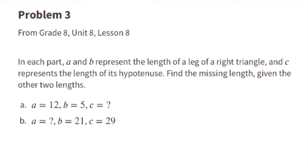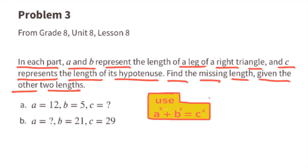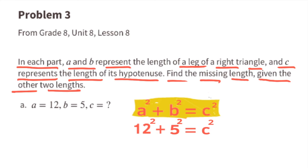Problem number three from Unit 8 Lesson 8: in each part, a and b represent the length of a leg of a right triangle and c represents the length of its hypotenuse. Find the missing length given the other two lengths using the Pythagorean theorem: a squared plus b squared equals c squared. The information tells us that 12 squared plus 5 squared equals c squared.